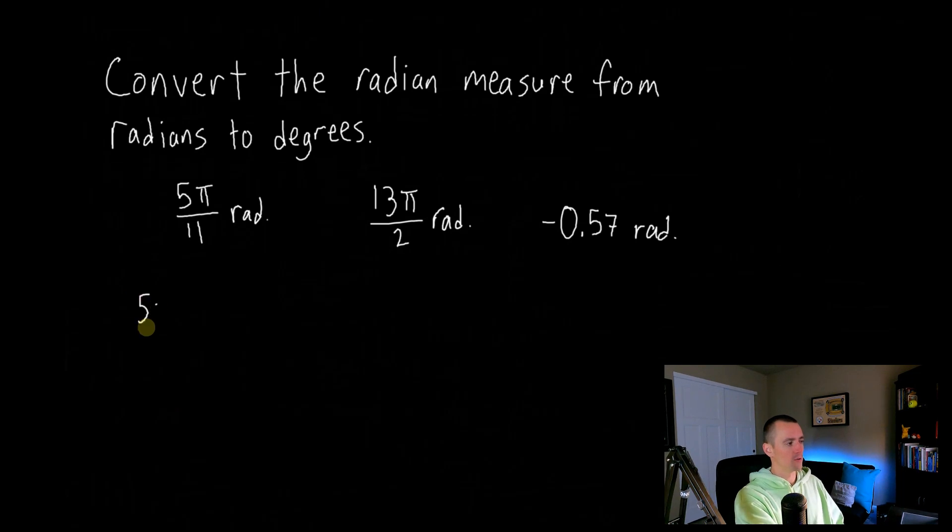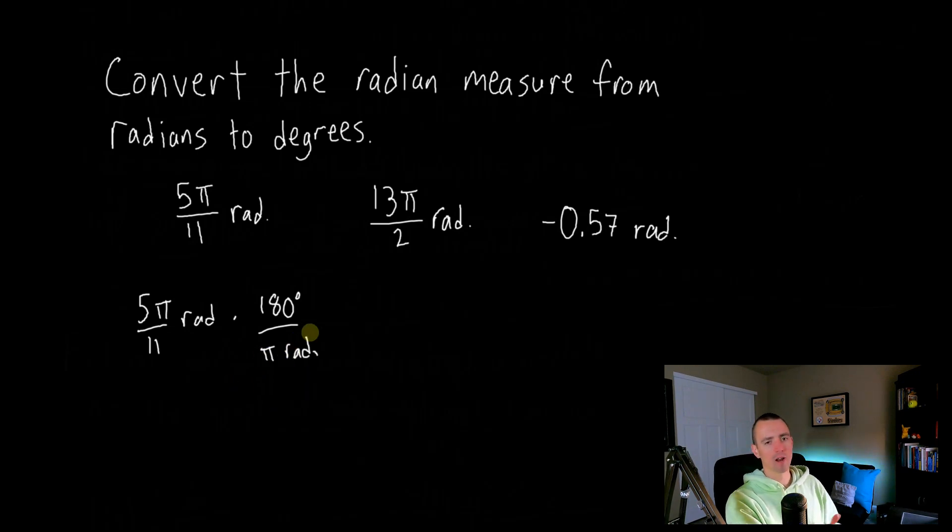So if I want to do this, I could multiply 5 pi over 11 radians times 180 degrees over pi radians. So I know it looks kind of weird having the units in here as well, but what you'll notice here is kind of interesting. It kind of does the work for you in terms of remembering if it's 180 degrees over pi radians or vice versa.